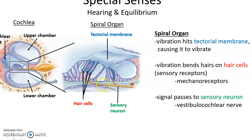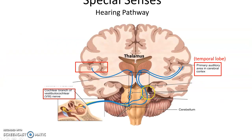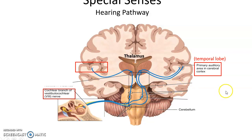The hair cells pass the signal on to sensory neurons leading to the vestibulocochlear nerve. That signal travels to the brain stem and eventually to the thalamus, and from there it's sent to the primary auditory area of the temporal lobe. It's a bit more complicated for hearing — the signal from one ear gets sent to both the right and left temporal lobes, so we detect the sensation from one ear in both temporal lobes. The key pathway is: brain stem → thalamus → primary auditory area.